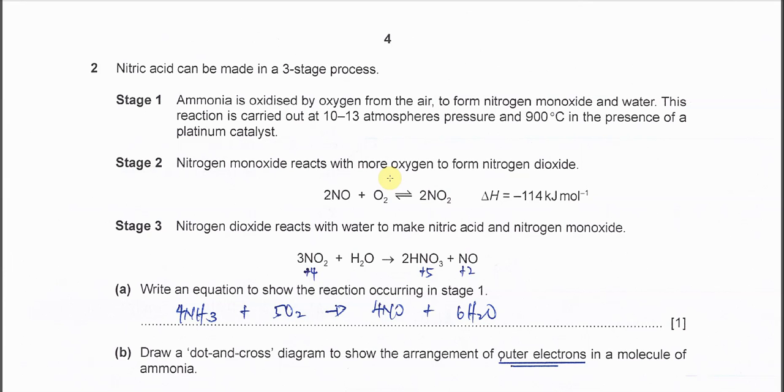Question 2: Nitric acid can be made in a three-stage process. Stage 1, ammonia is oxidized by oxygen from the air to form nitrogen monoxide and water.